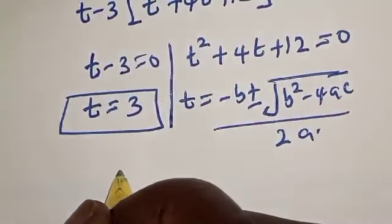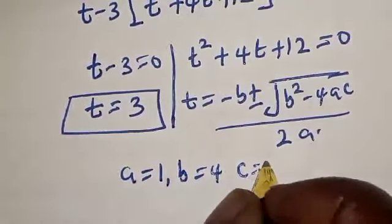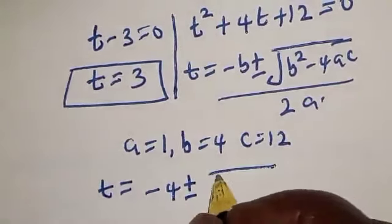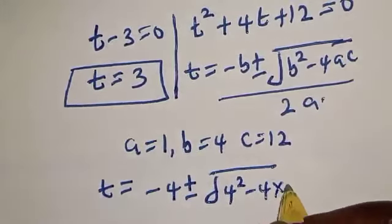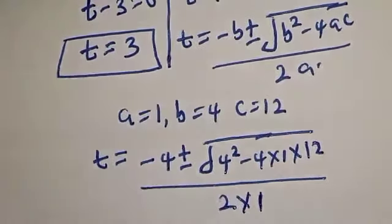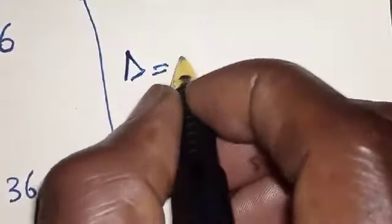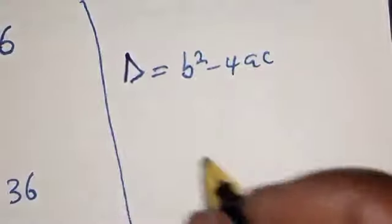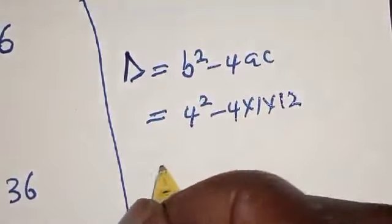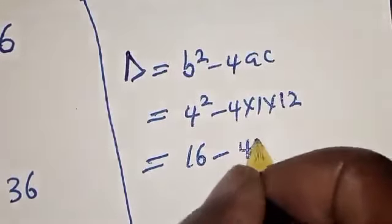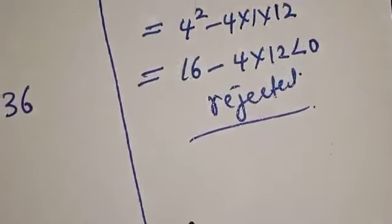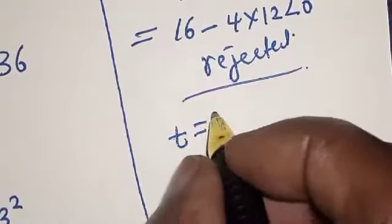From the second case, let's use the quadratic general formula since t squared plus 4t plus 12 is a quadratic equation: t equals negative b plus or minus square root of b squared minus 4ac, divided by 2a. Here a equals 1, b equals 4, c equals 12. So the discriminant is 4 squared minus 4 times 1 times 12, which equals 16 minus 48, which is less than 0. This is rejected. So the only true solution is t equals 3.